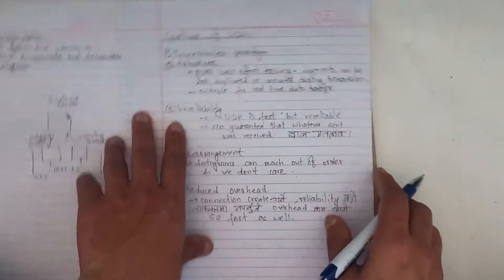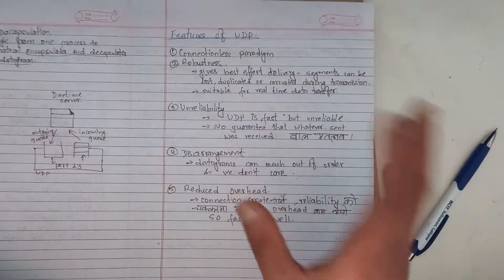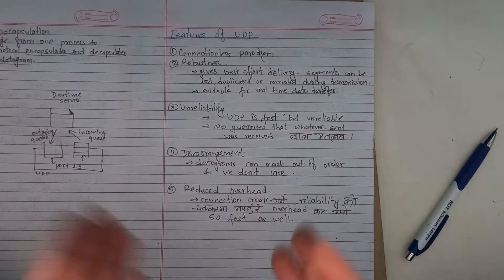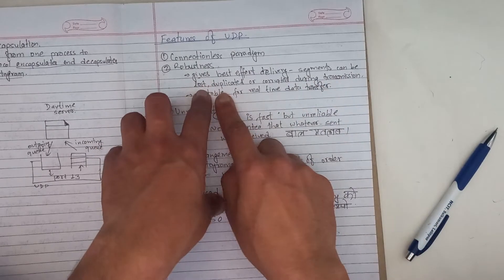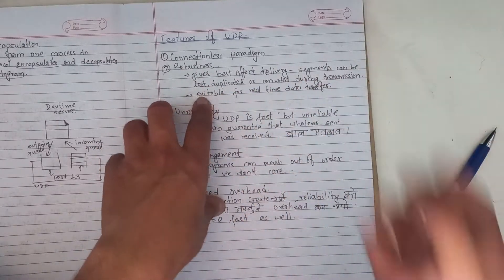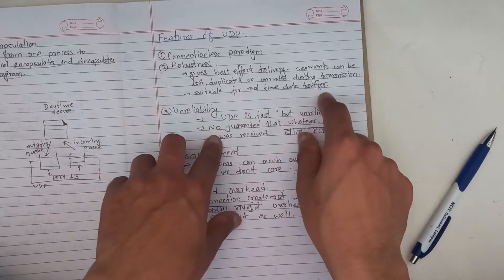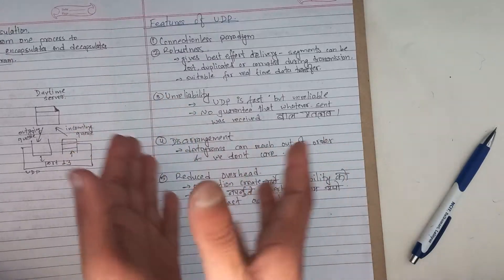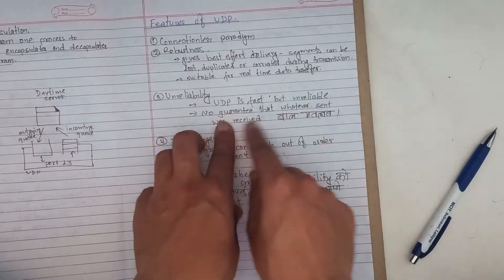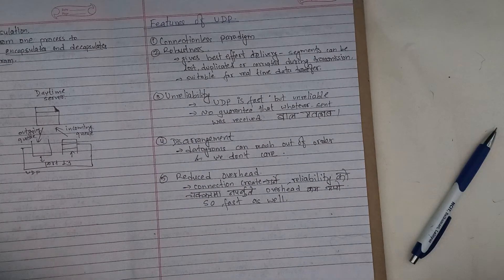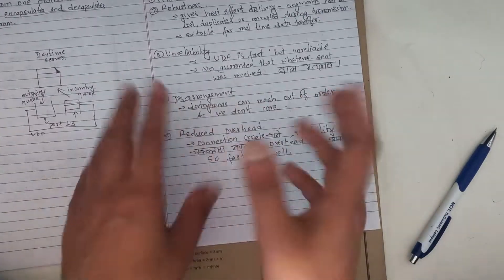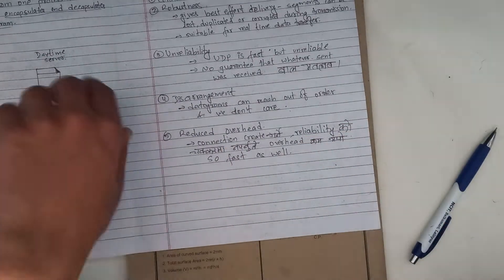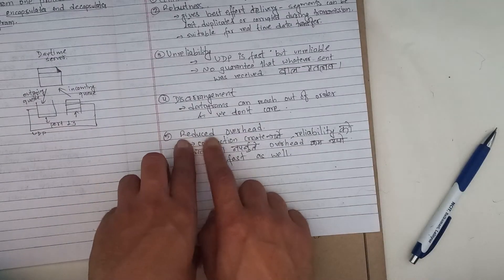Let's see about the features of UDP. Connectionless paradigm — no connection is needed. UDP gives best-effort delivery. Segments can be lost, duplicated, or corrupted during transmission, so it is suitable for real-time data transfer. Unreliability means that UDP is fast but unreliable — no guarantee that whatever was sent was received. Disarrangement means that datagrams can be out of order. And reduced overhead.